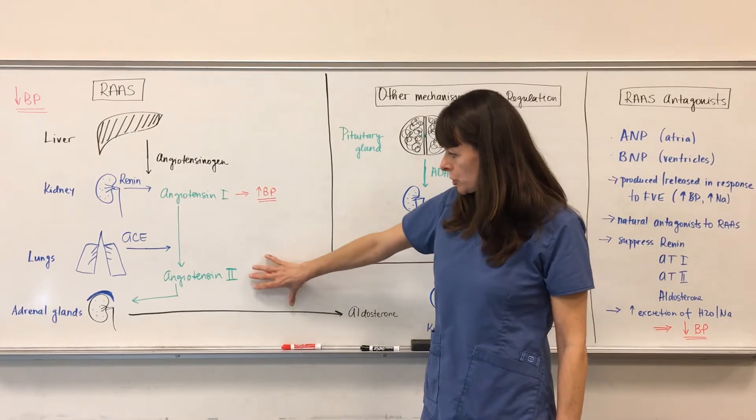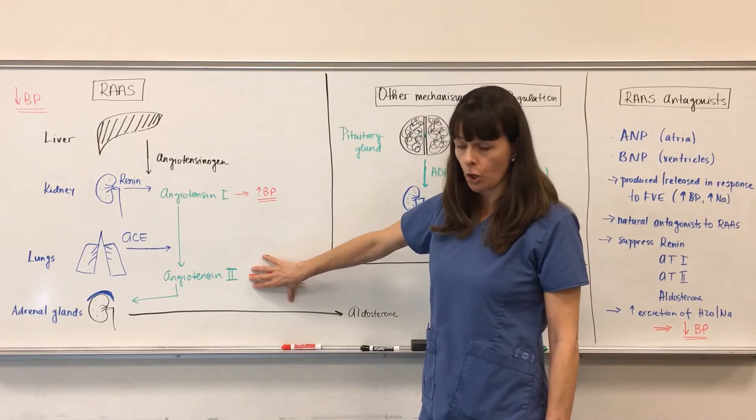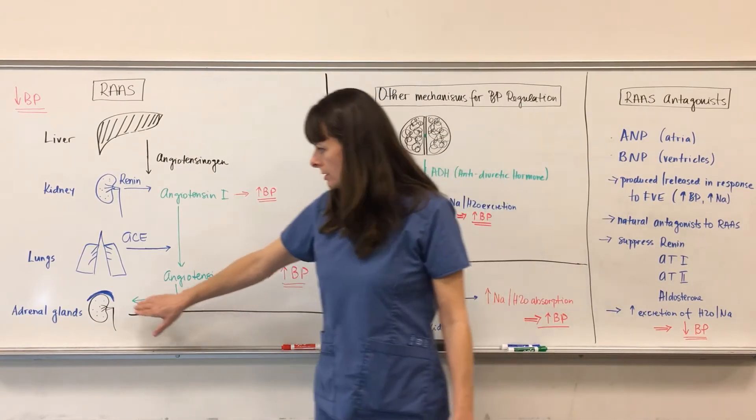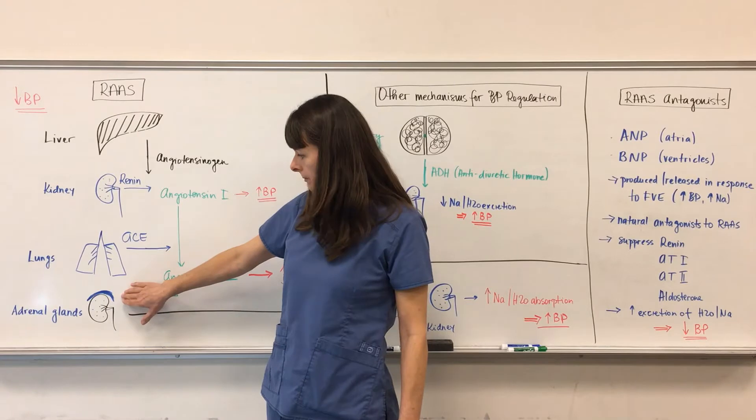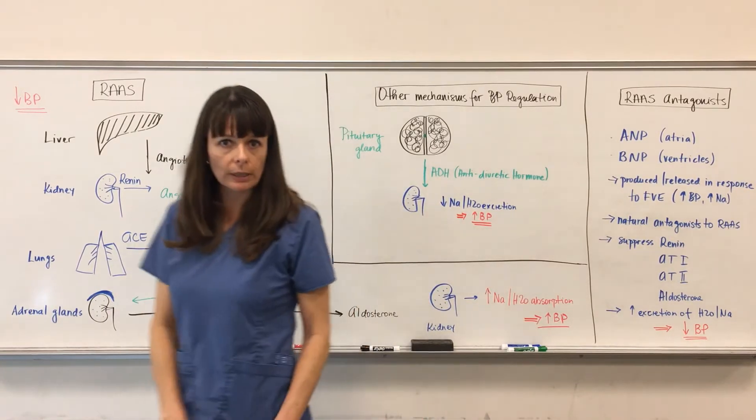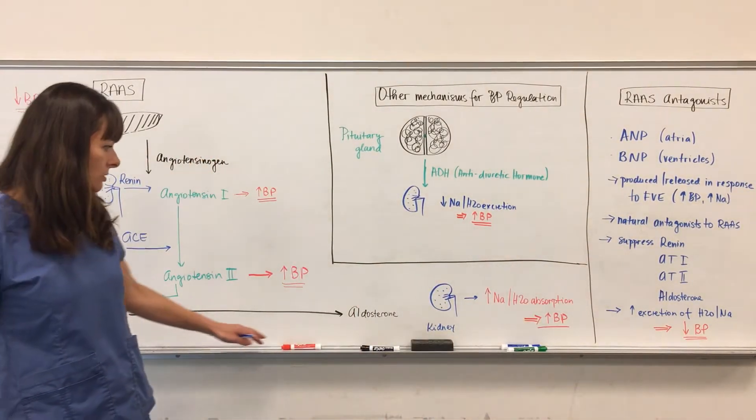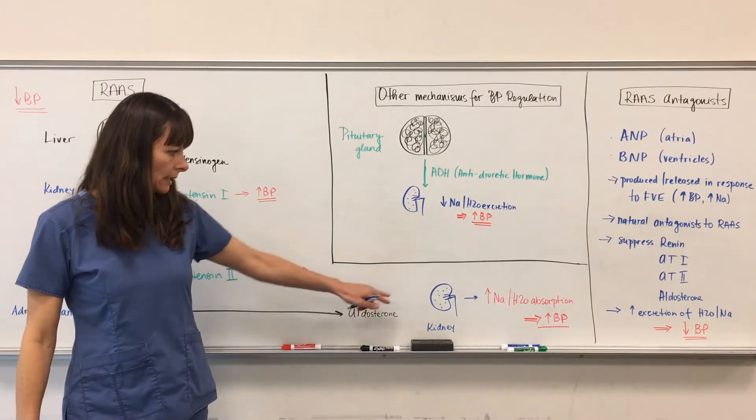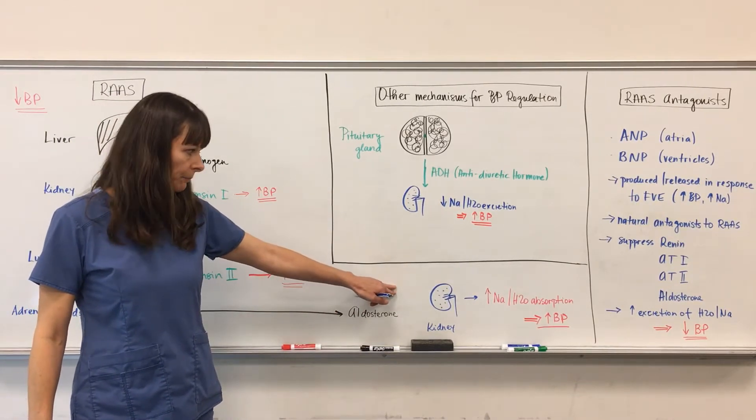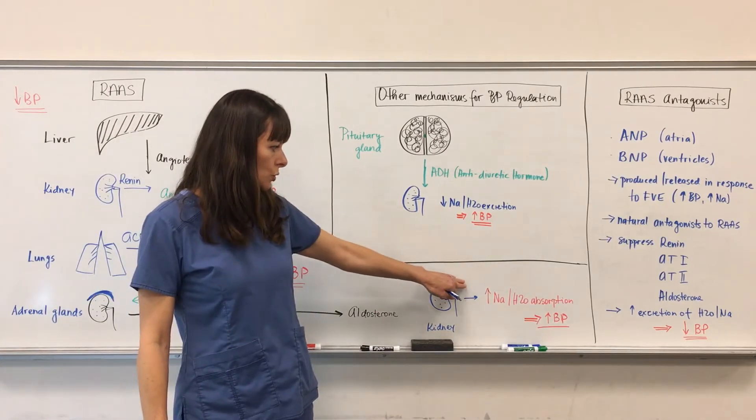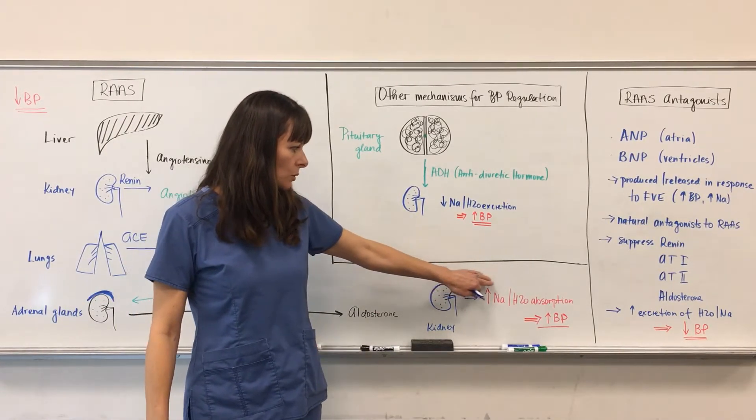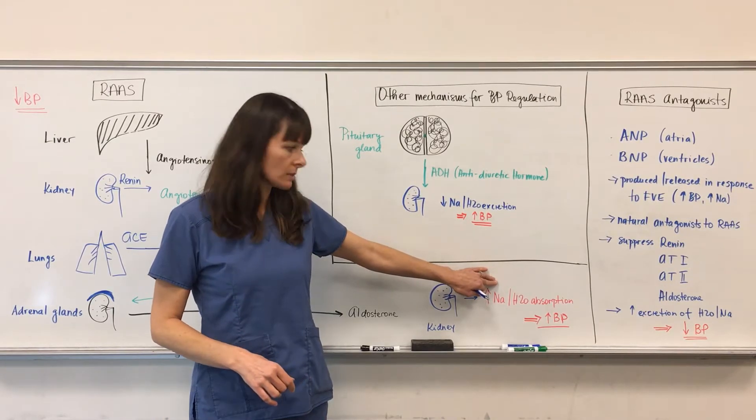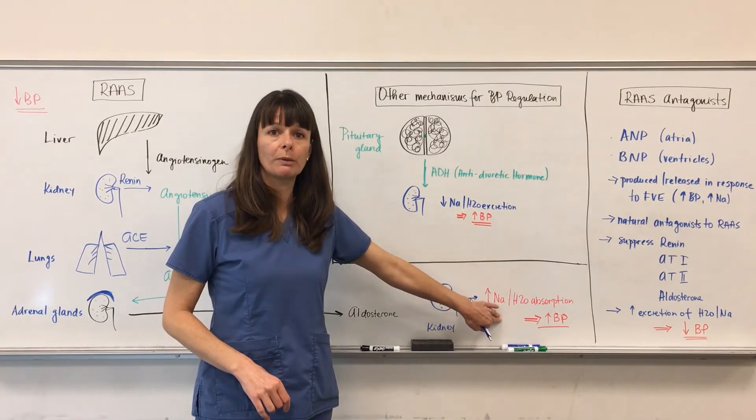If the blood pressure here again remains low, then the angiotensin 2 works on the adrenal gland on top of the kidney, and then the kidney will release aldosterone. Aldosterone works again on the kidney, but this time it helps to increase the absorption of sodium and water, and we know if we have more fluid in our system, the blood pressure will be increased.